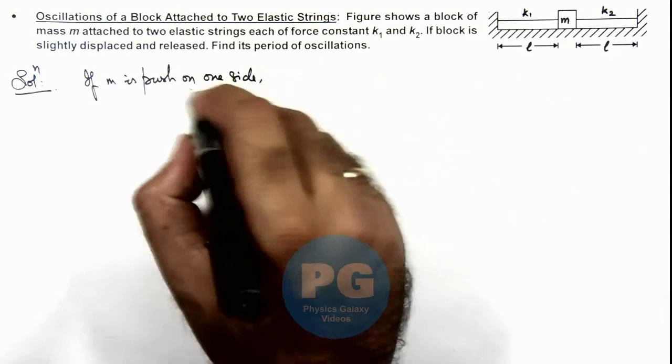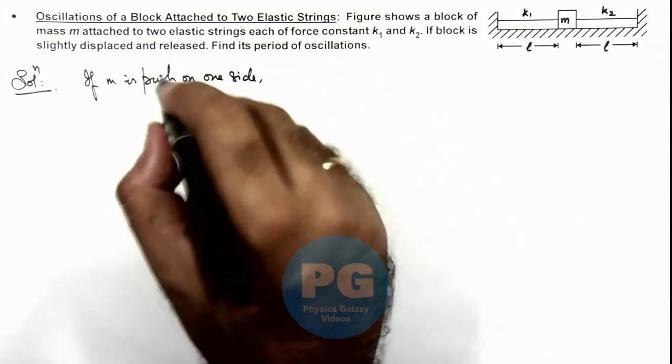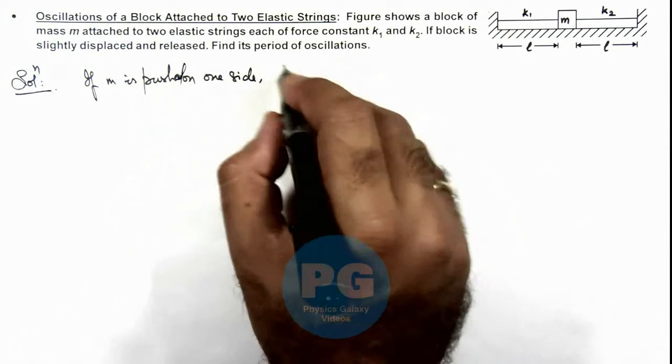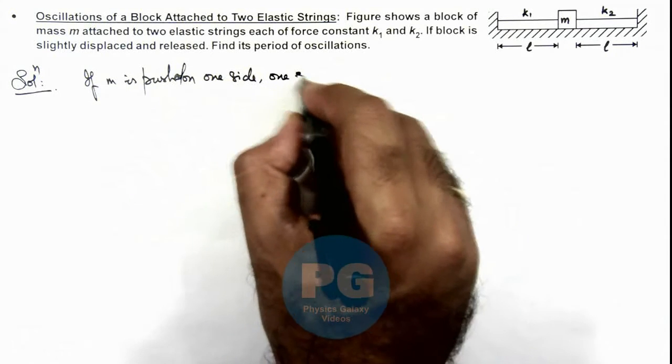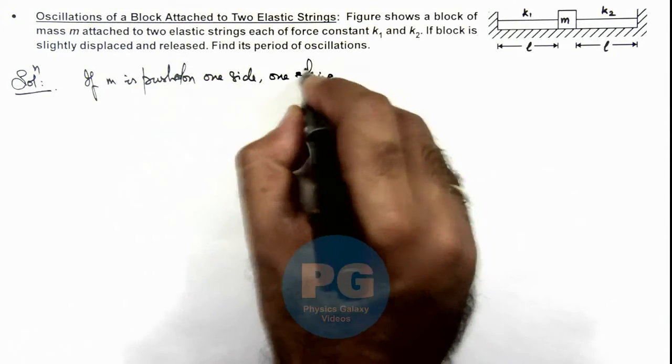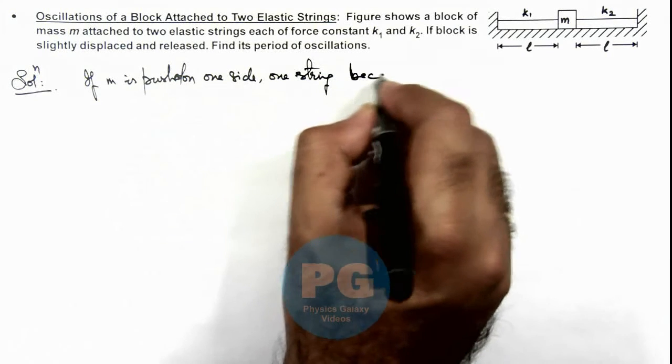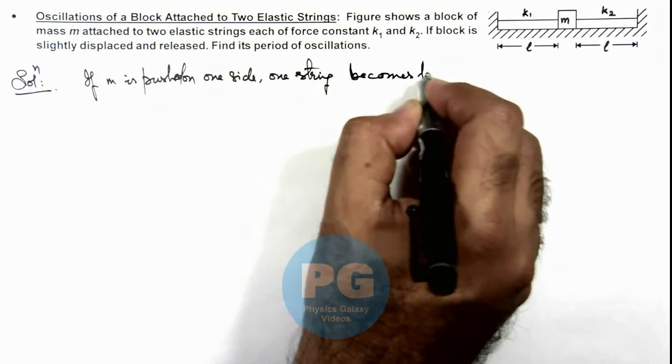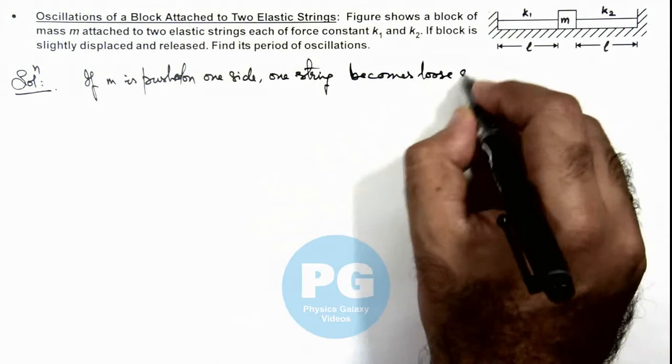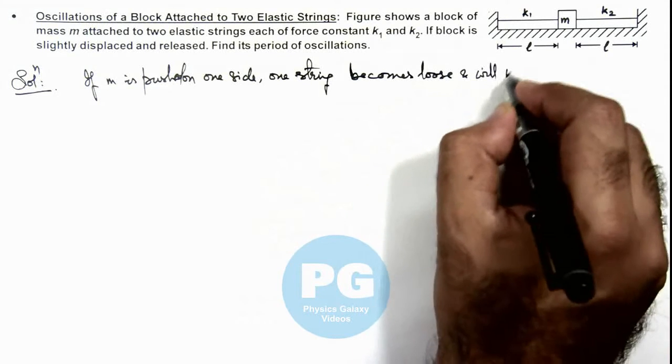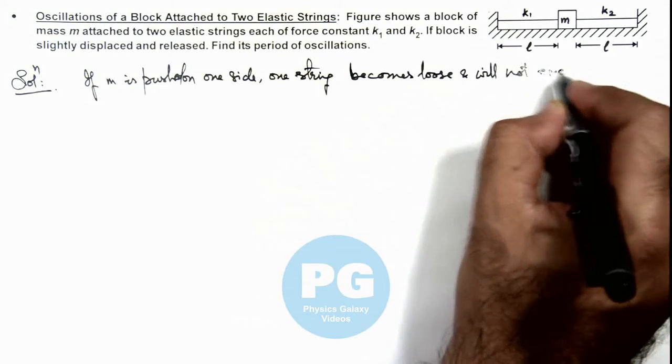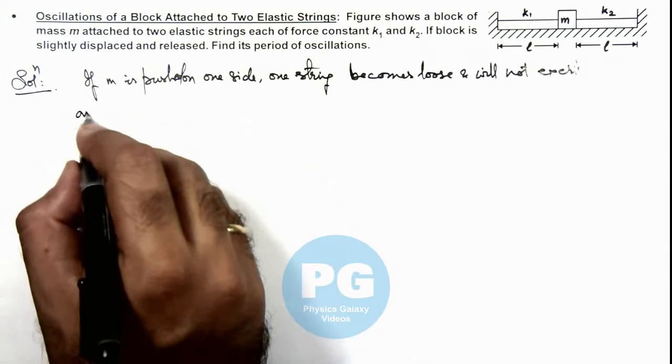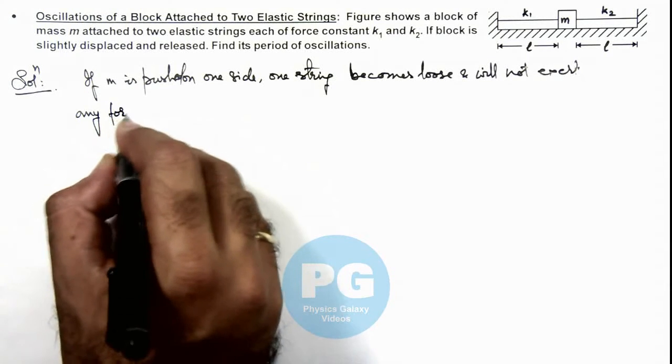So we can say if m is pushed on one side, one string becomes loose and will not exert any force on the block.